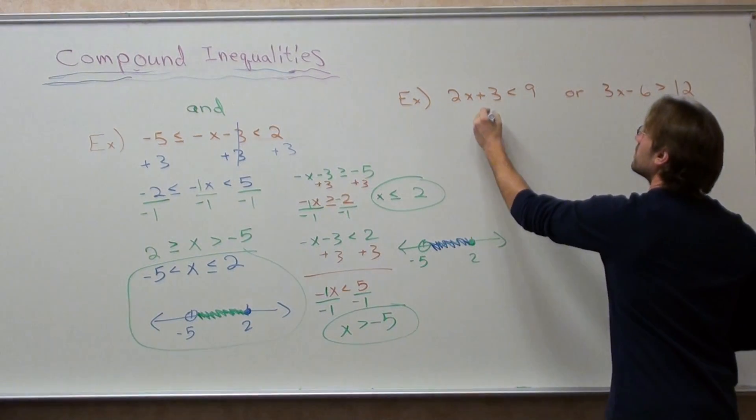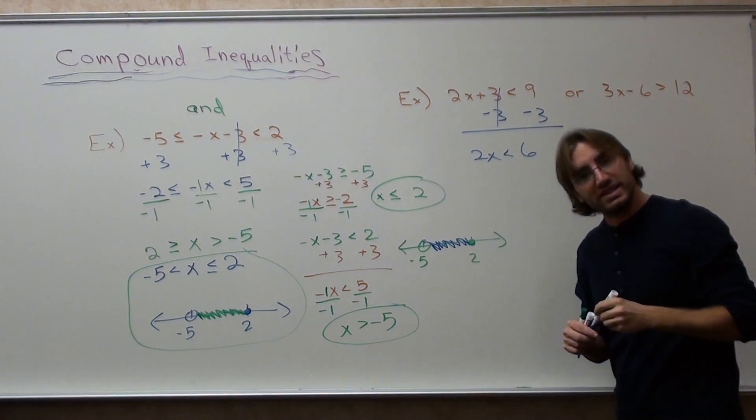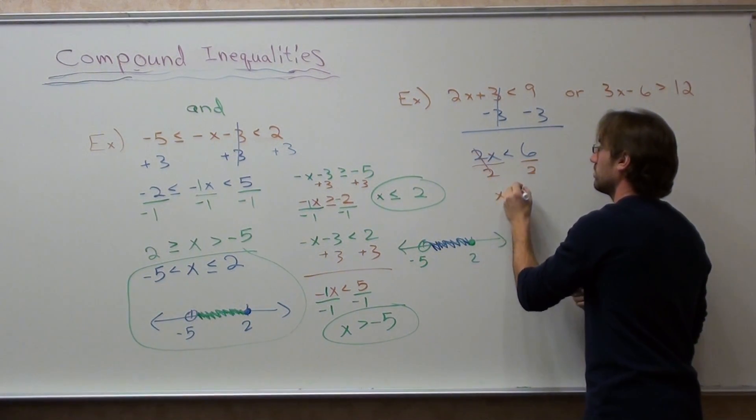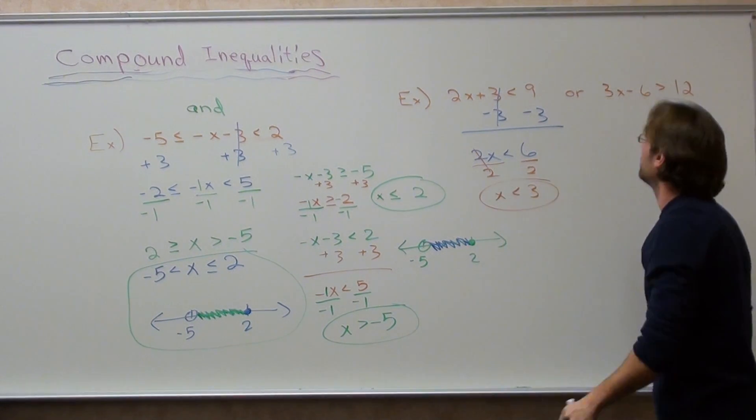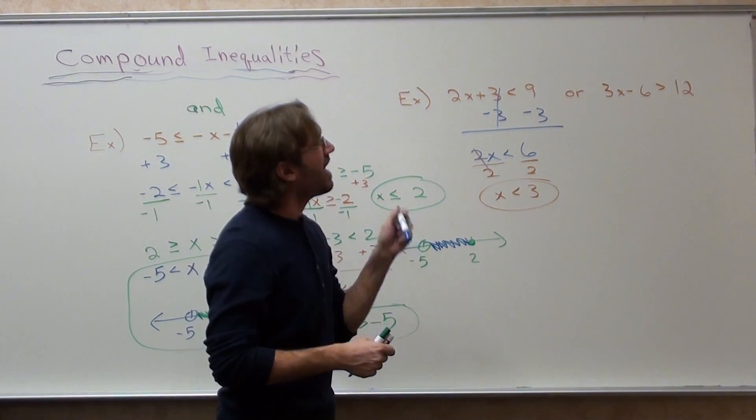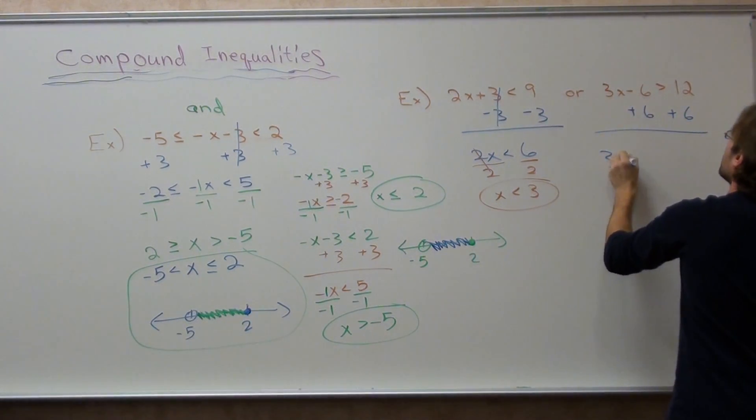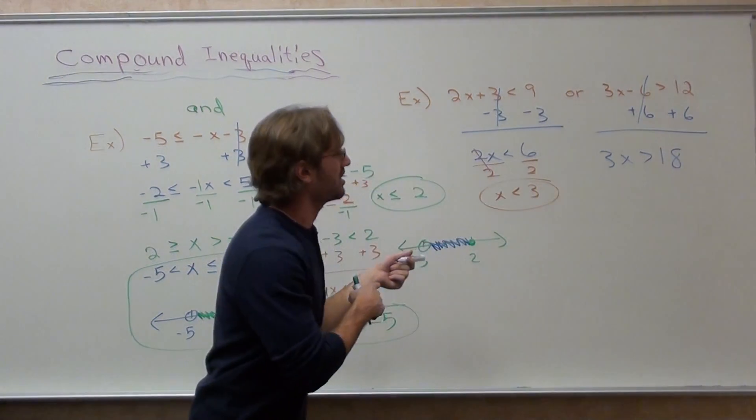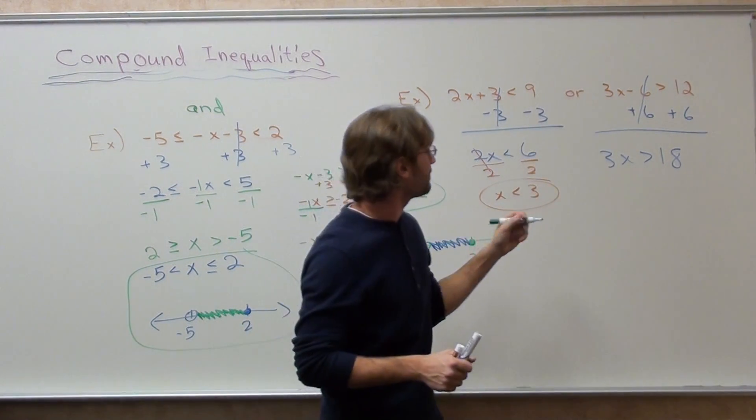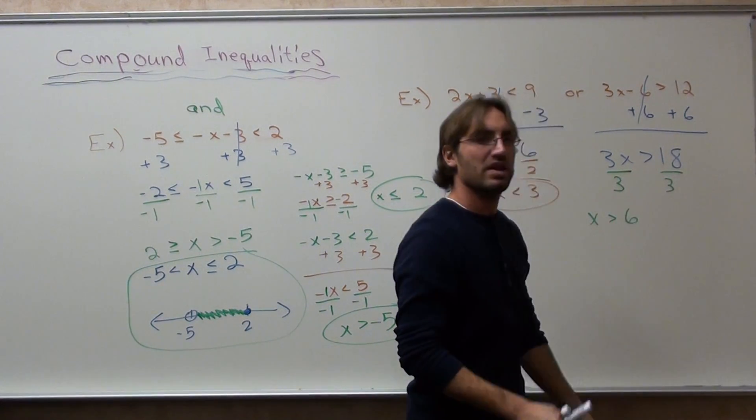So, I'm going to solve 2x is less than 6. Divide by 2. x is less than 3. Next one. Good catch. 3x minus 6 is greater than 12. Add 6 to both sides. 3x is greater than 18. I added 6 to both sides. 12 plus 6 is 18. Divide by 3. x is greater than 6.